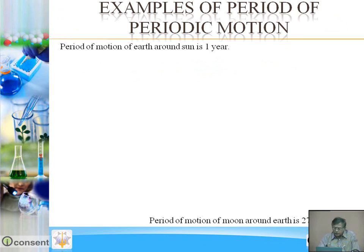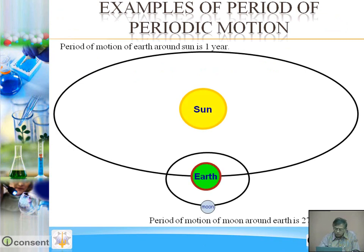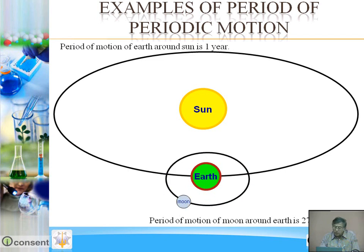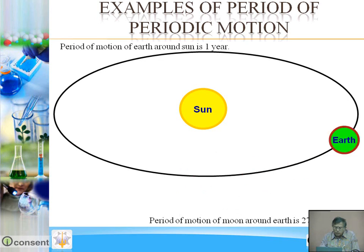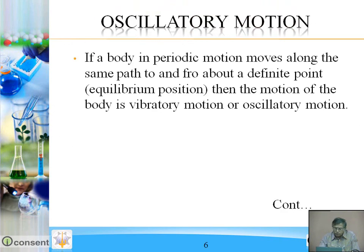Examples of the period of periodic motion. The moon revolves around the earth — the period of motion of the moon around the earth is 27.3 days. The earth revolves around the sun — the period of motion of the earth around the sun is 1 year.